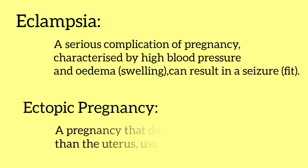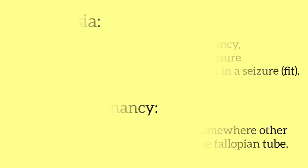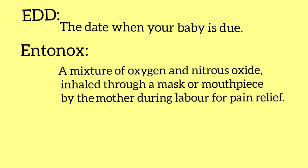Ectopic pregnancy is a pregnancy that develops somewhere other than the uterus, usually in the fallopian tubes. EDD stands for expected date of delivery — the date when your baby is due. Entonox is a mixture of oxygen and nitrous oxide inhaled through a mask or mouthpiece by the mother during labor for pain relief.